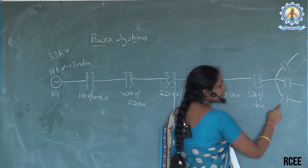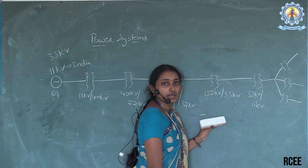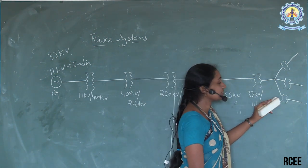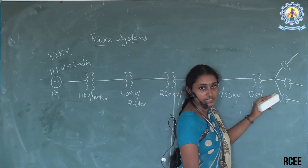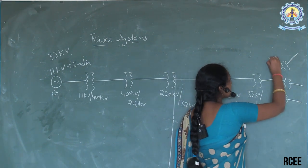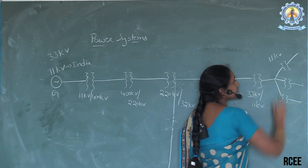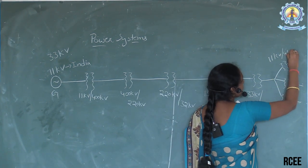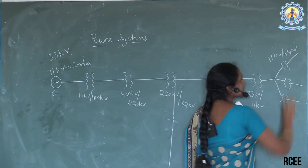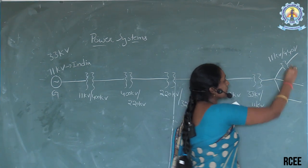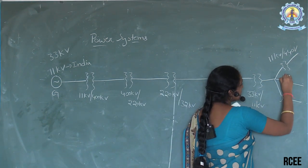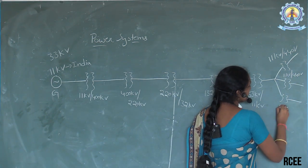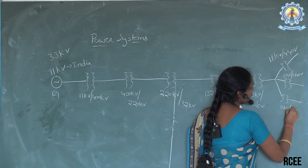These transformers — you all know about them — these transformers are at your streets. The input to those transformers is 11 kV, and from the transformer, 400 volts will be available. So this is 11 kV to 440 volts.